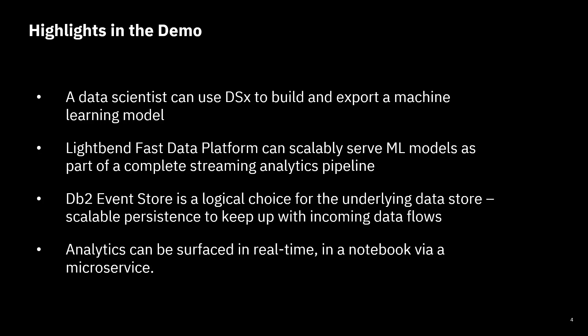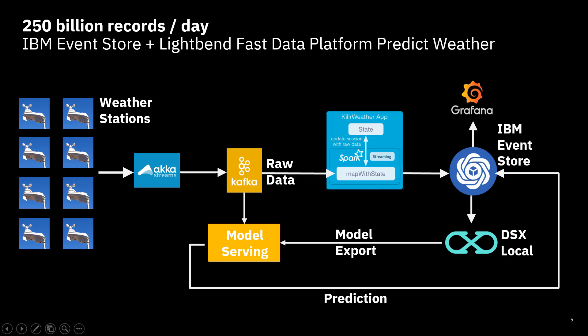Once we have all of the data we're going to surface it in real time in a notebook using a microservice. We're going to be collecting a whole bunch of weather data — temperature, dew points, barometric pressure, and all of these things from various weather stations from two major cities: New York and San Francisco. With that data we're going to be able to predict what is going to happen in the future based on all the real-time data we're ingesting.